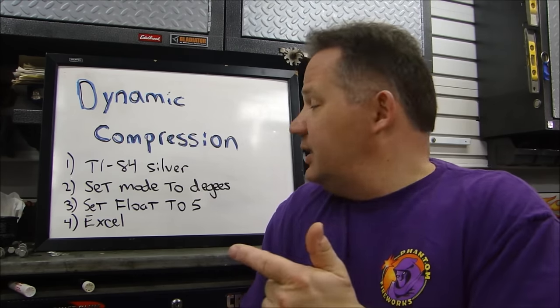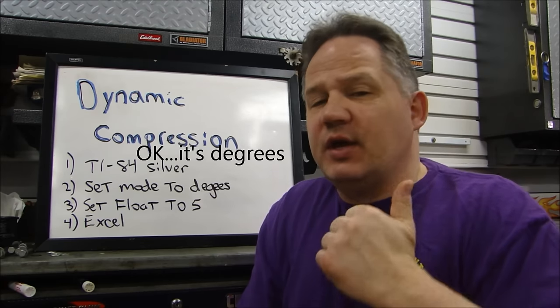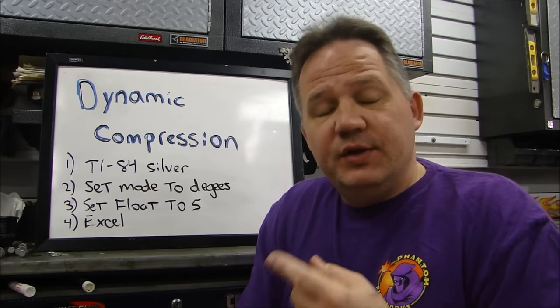Second, you have to set the mode on the calculator to degrees. When it comes to you, the mode will be set to radians. If it's set to radians, your calculations will not come out right, so you've got to change it to degrees. So read the information on your calculator, figure out how to set it to degrees.